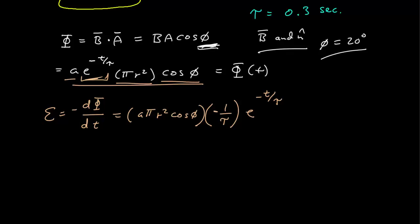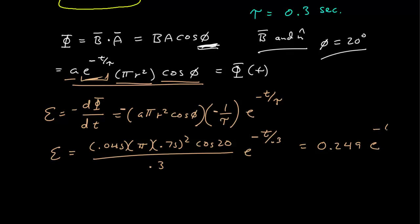So I'm going to simplify all this. I know all the values here, so my EMF as a function of time is 0.045 times pi times 0.75 squared times cosine of 20, all over 0.3, then e to the minus T over 0.3. And my calculator tells me that all of that is 0.249 e to the minus T over 0.3. So there's the EMF induced in the loop as a function of time, the magnitude of it.